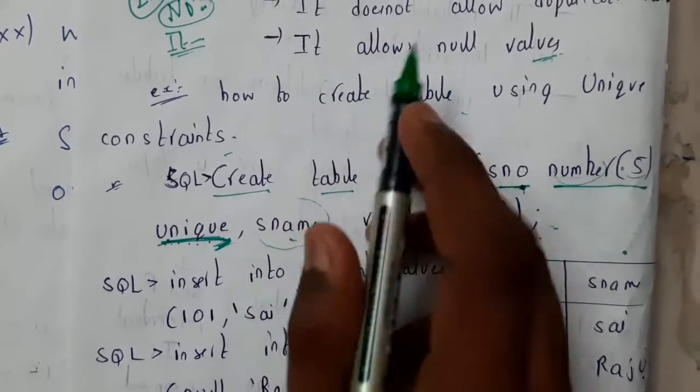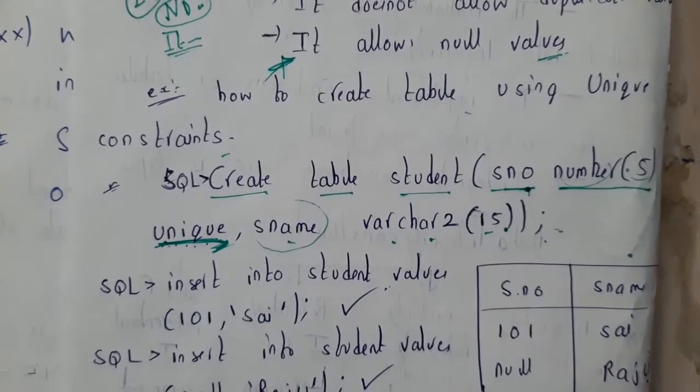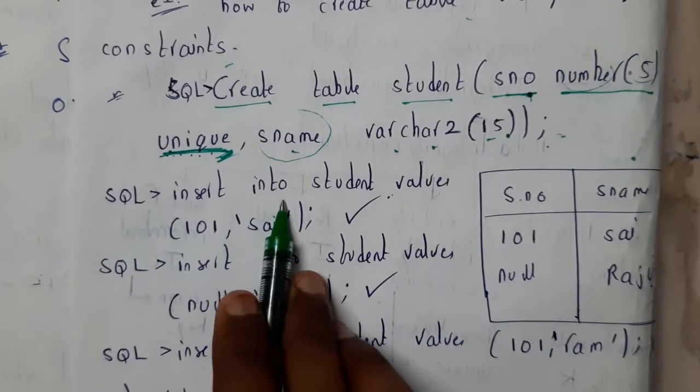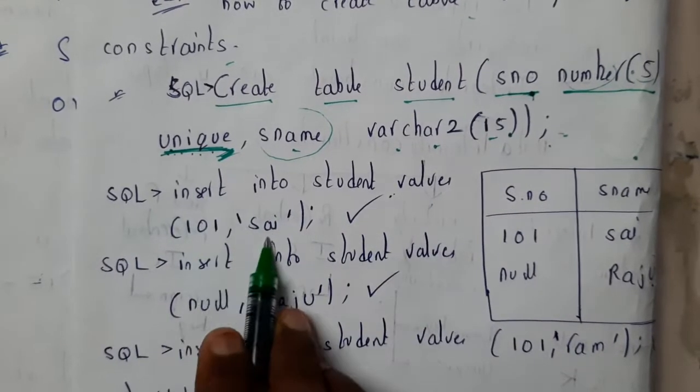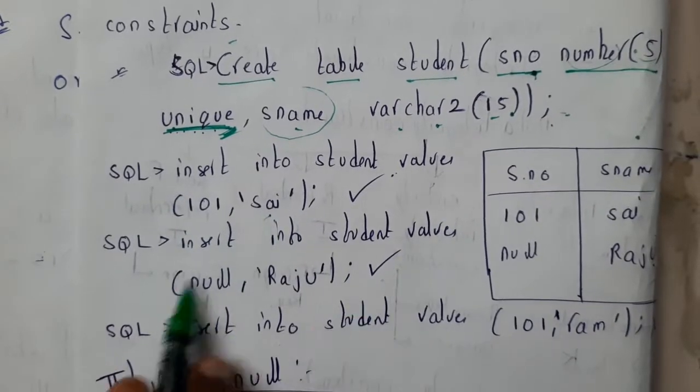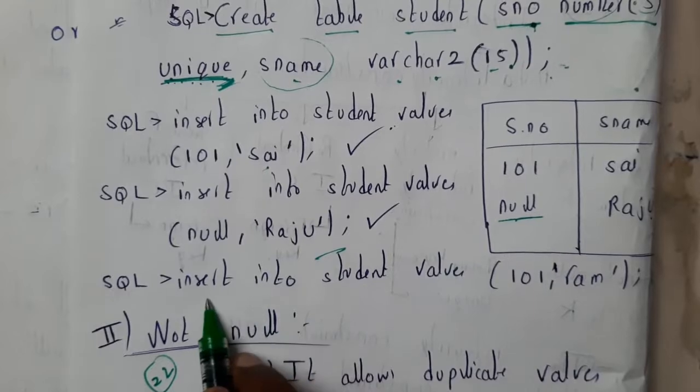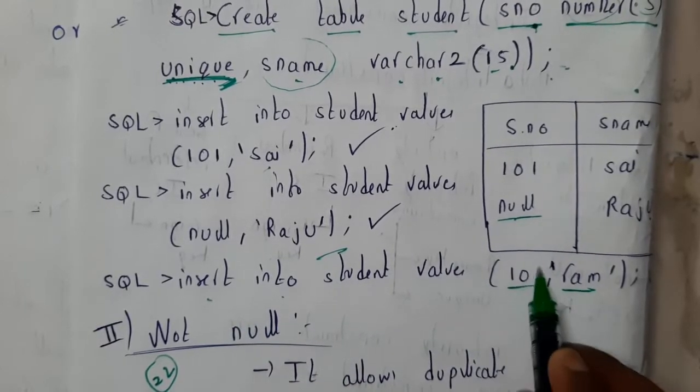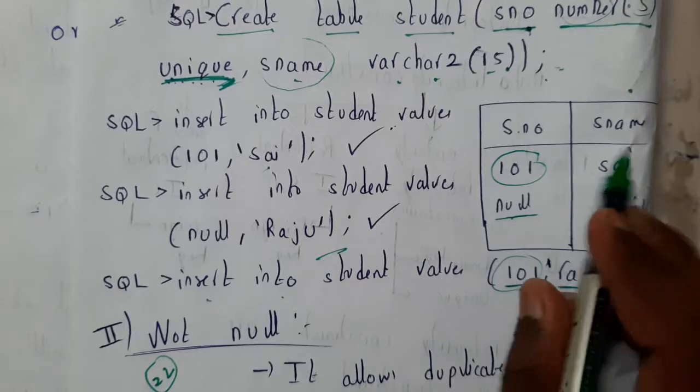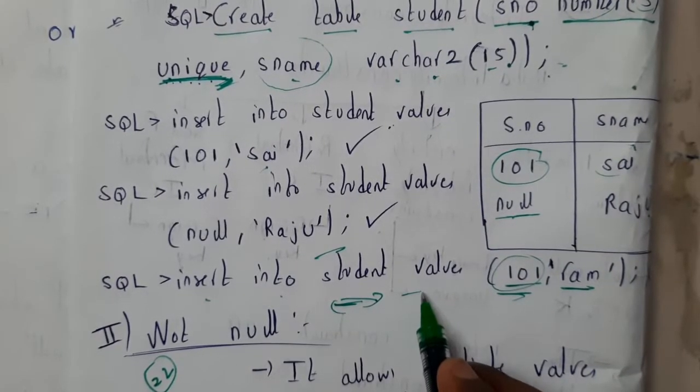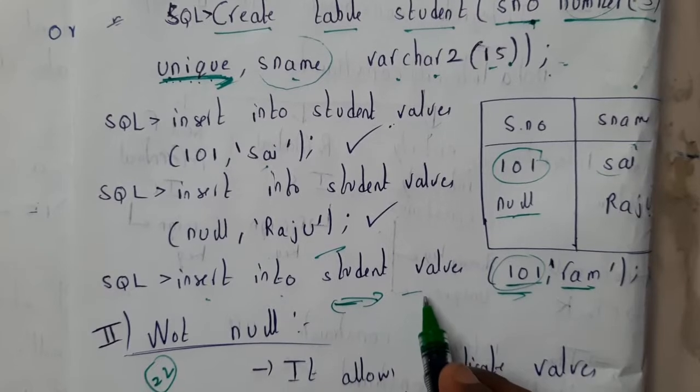Let's try to insert values. SQL insert into student values (101, 'Sai'). We inserted one more with null value - it's okay, it will accept it. Insert student value (101, 'Ram') - but already 101 is occupied by student Sai. In this situation, we will get an error: constraint violated.